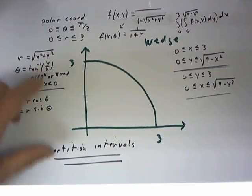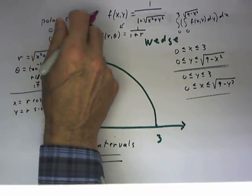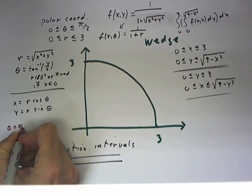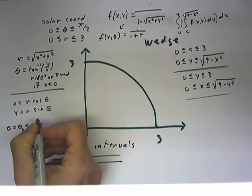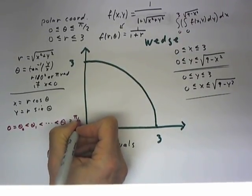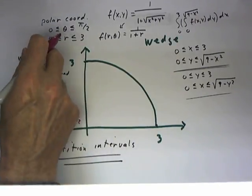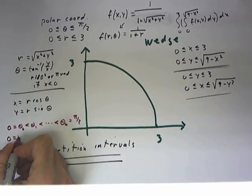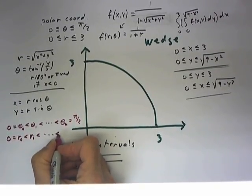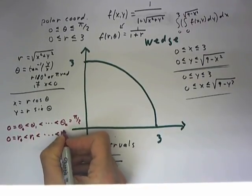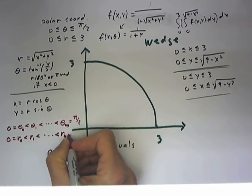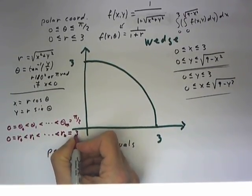So these are the intervals that need to be partitioned. We can write our partitions as 0 equals theta sub 0 less than theta sub 1 less than so forth up to theta sub n, which is pi over 2. And r from 0 to 3, so 0 would equal r naught, which is less than r1 and so forth up to rn. And I don't want to use the same symbol here, so we're going to make this a theta m and an rn. rn equals 3.